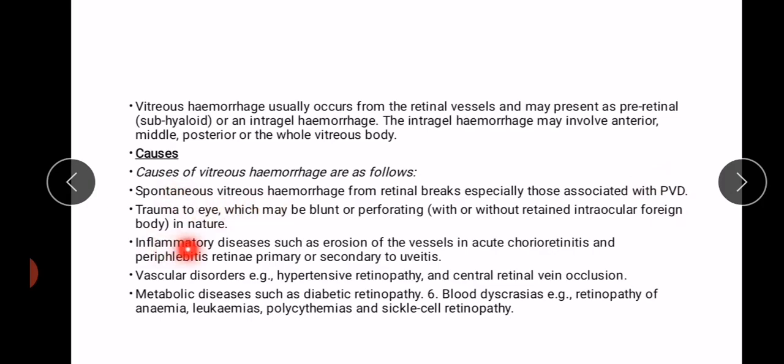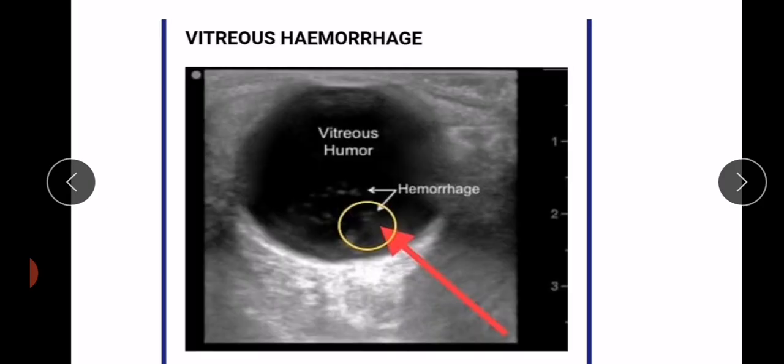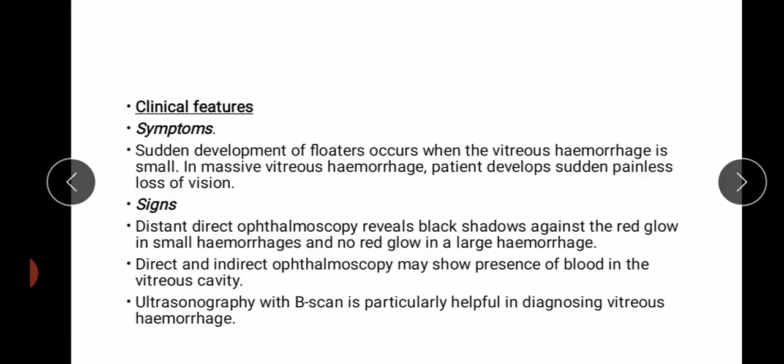Other causes include trauma to the eye, inflammatory diseases such as uveitis, vascular disorders such as hypertensive retinopathy and central retinal vein occlusion — which leads to neovascularization — metabolic diseases such as diabetic retinopathy (which also leads to neovascularization), and blood dyscrasias such as retinopathy of anemia, leukemia, polycythemia, and sickle cell retinopathy. Vitreous hemorrhage is one of the common causes of sudden blindness.